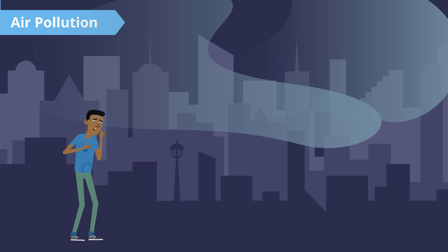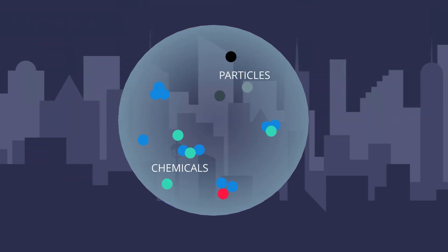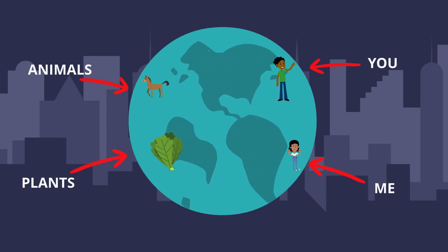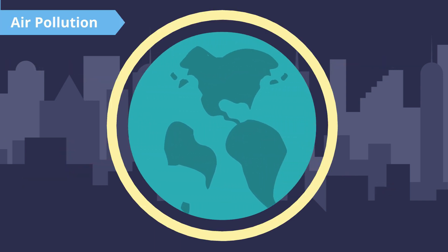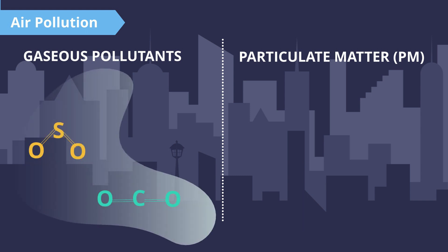It is important to understand what air pollution is. In the simplest of terms, air pollution is composed of different chemicals and particles that are harmful to many living organisms. There are a multitude of pollutants in our atmosphere, but the major air pollutants can be split into two categories. The first is gaseous pollutants — pollutants in gas form, such as carbon dioxide or sulfur dioxide. The second category is particulate matter, or PM, which are fine solid particles suspended in gas, such as dust or smoke.